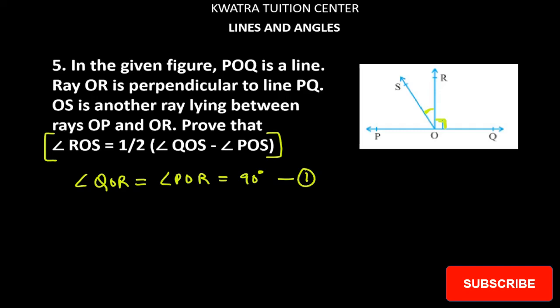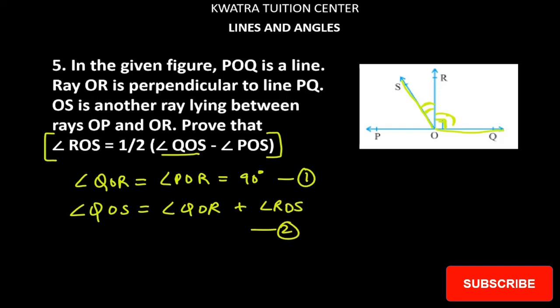Next, we are given QOS. Let's note the value of QOS in terms of QOR and ROS. Observe carefully how many angles are involved in QOS — one is QOR and the other is ROS. So can we write it as: QOS = QOR + ROS? Yes. So this is equation number 2.